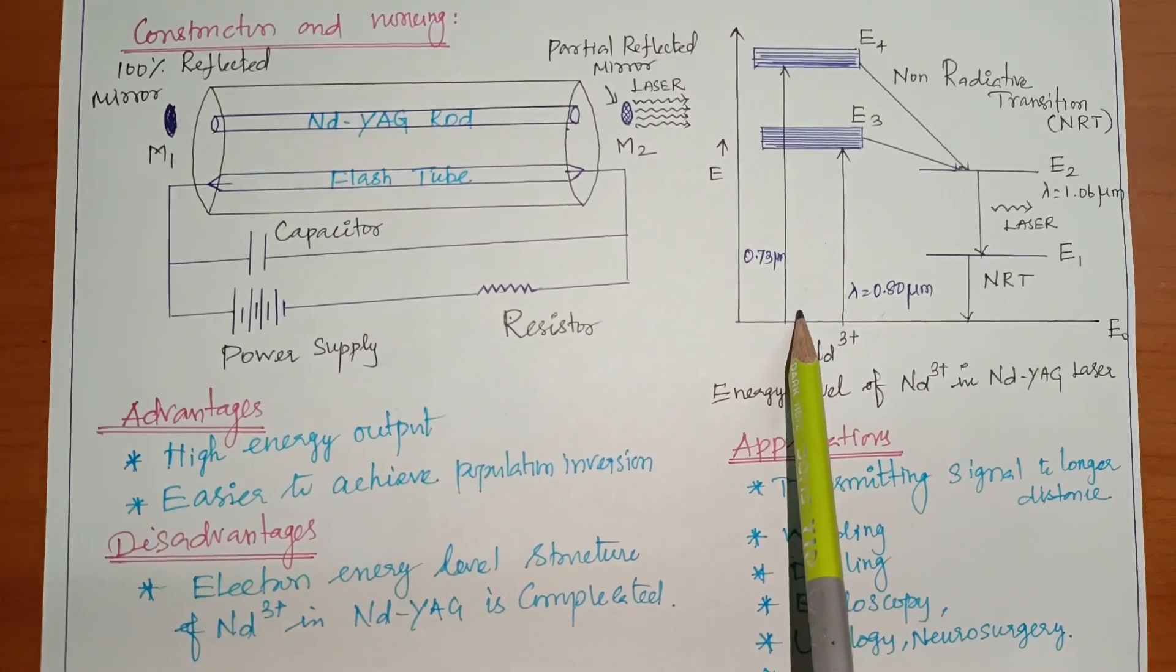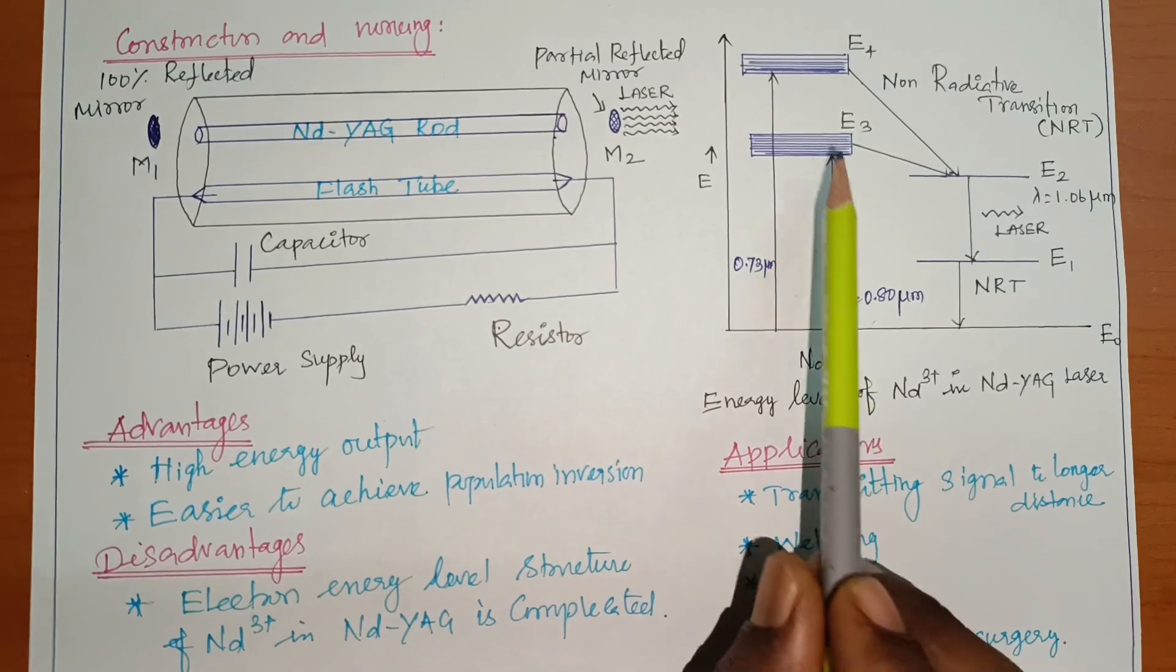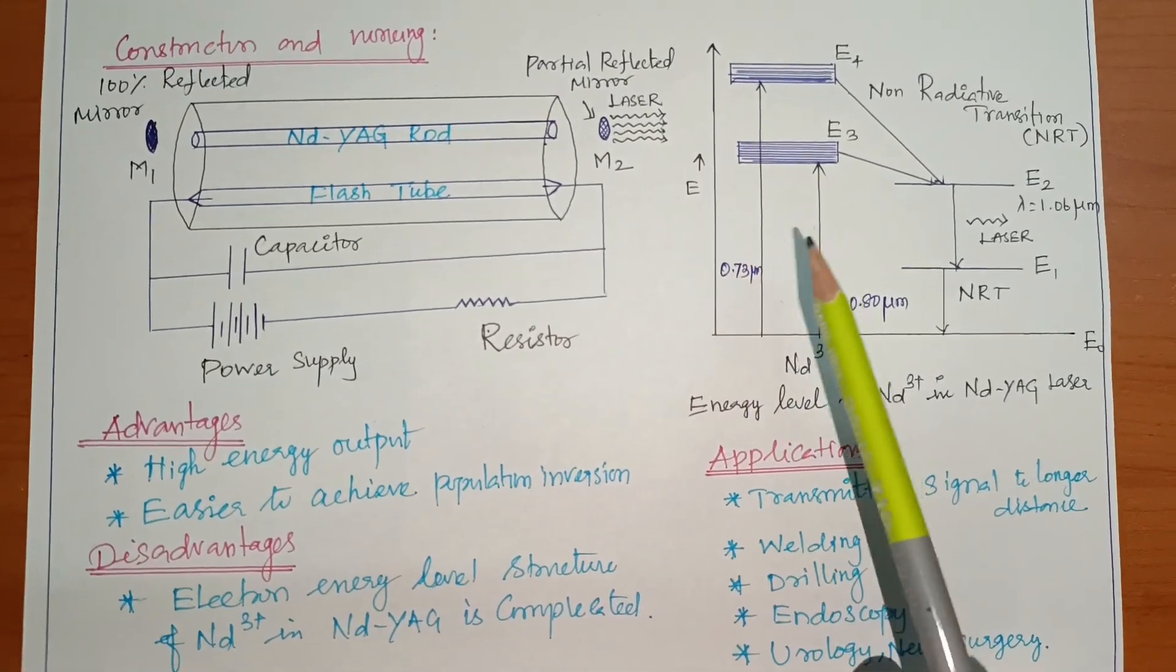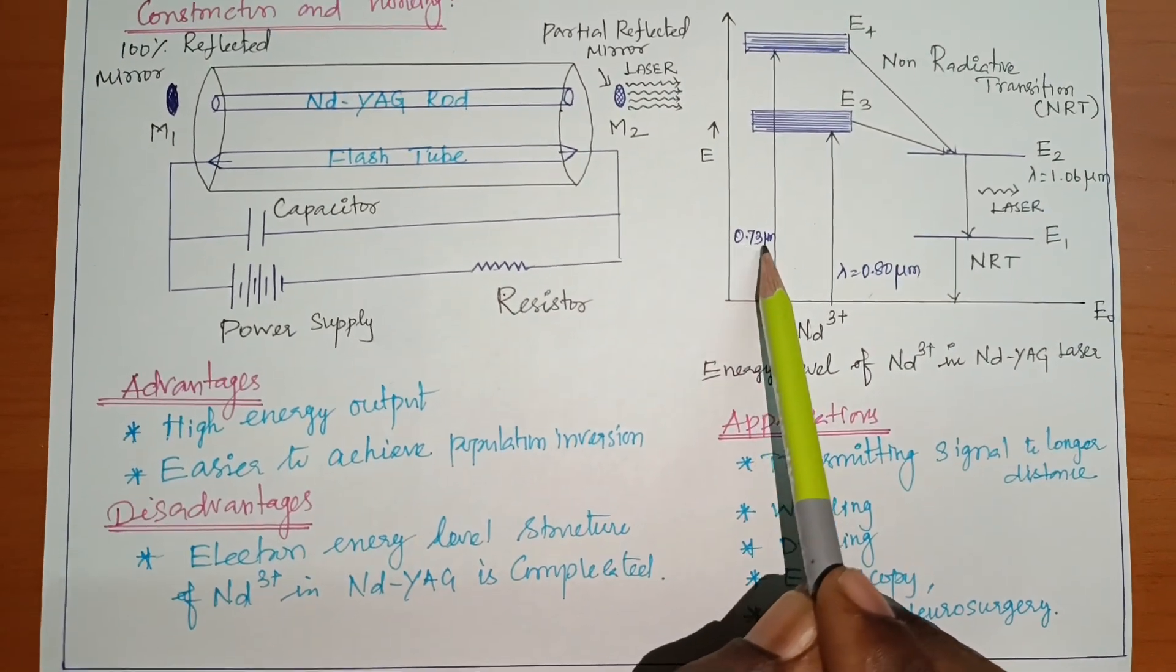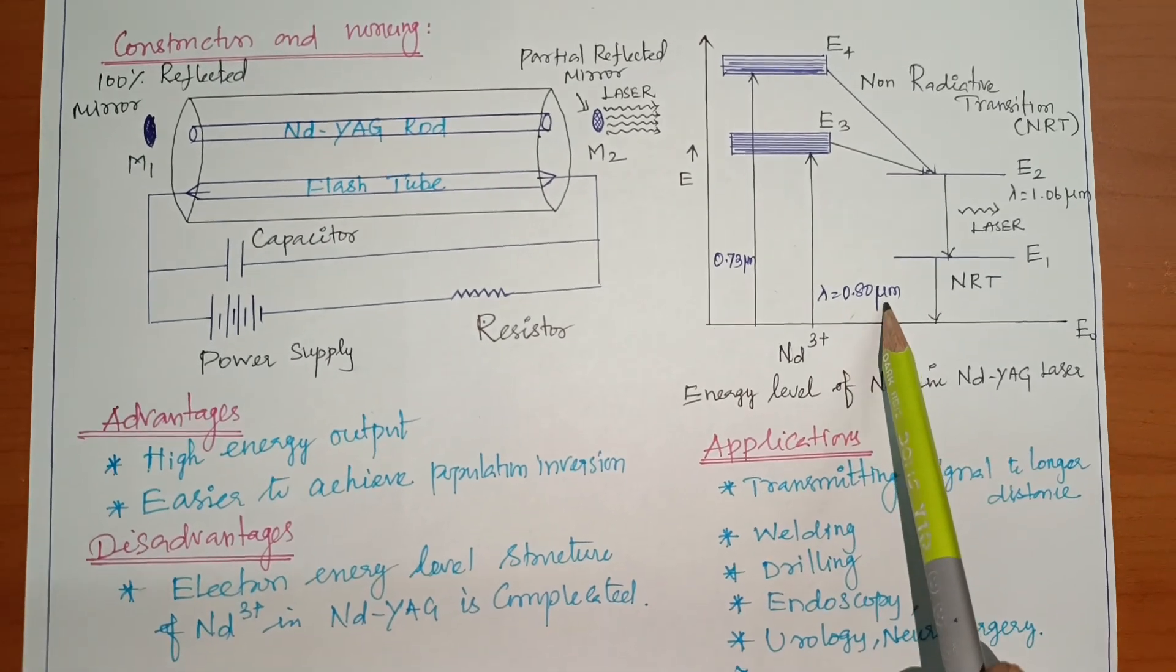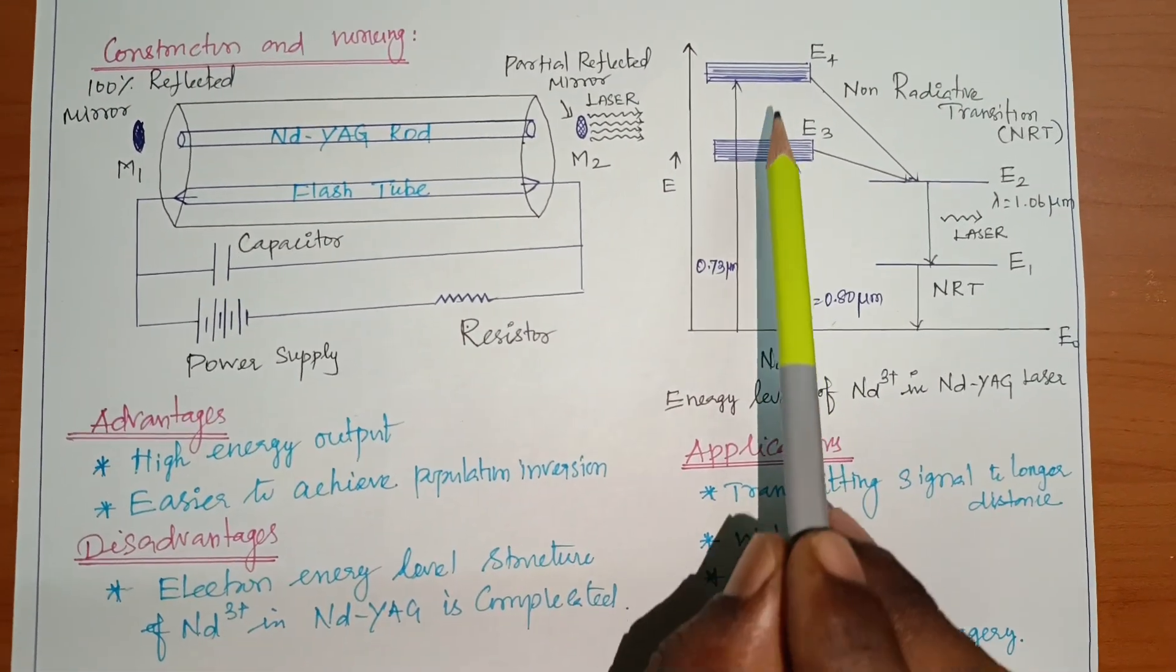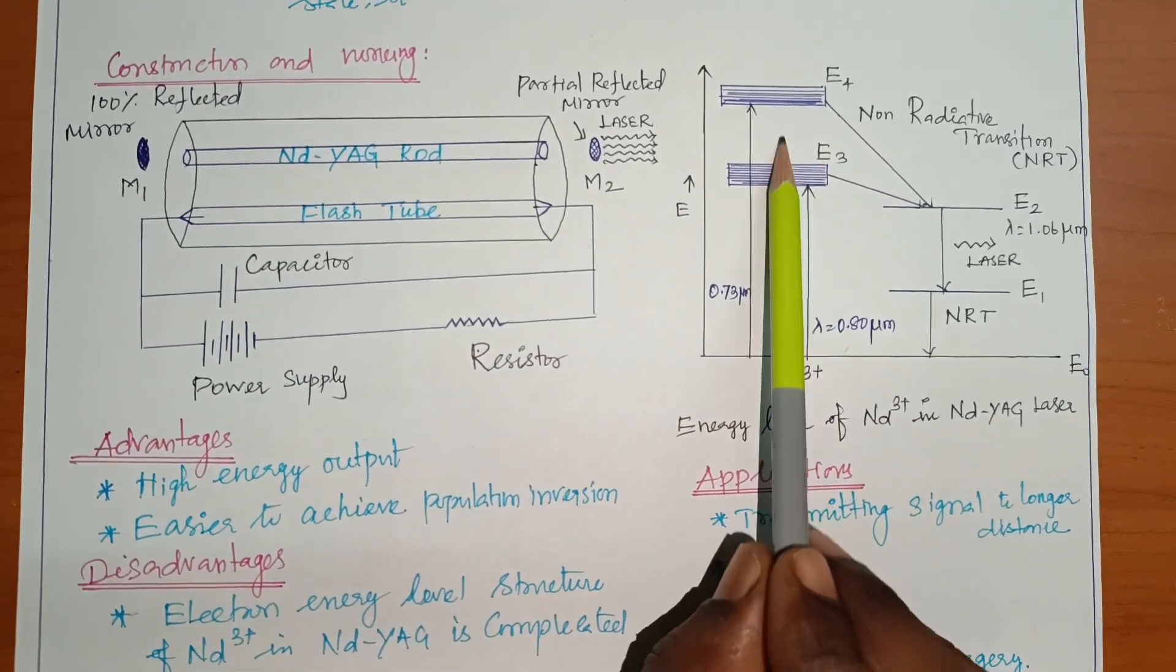To absorb photon energy. Iron under E0. Iron E3 and E4, two high-energy states. Why? If the energy of this, lambda is equal to 0.73 and the other one is equal to 0.80 micrometer. E3 is a high-energy state. So E4 and E3 is a high-energy state, excited state.